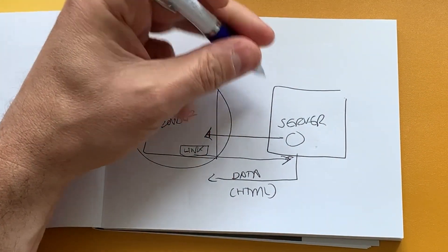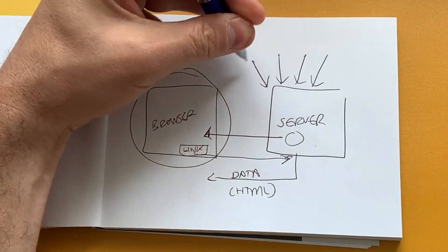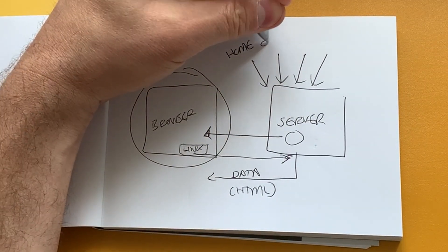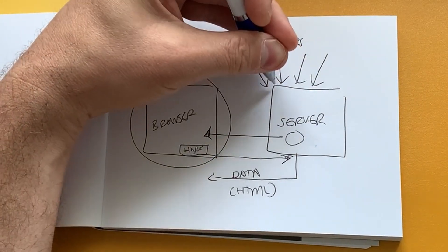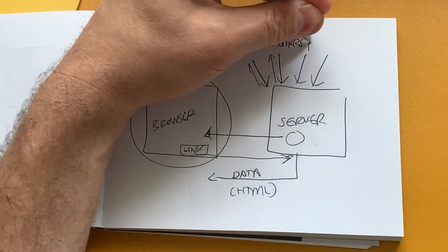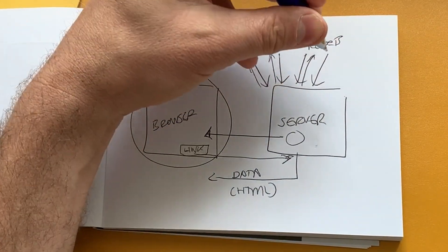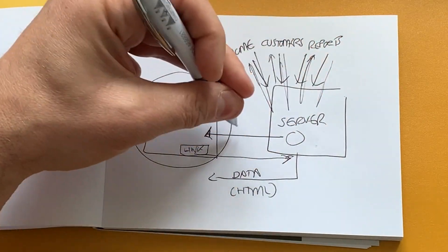Now the problem with this approach here is that the server can receive a lot of requests. For example, when you go to the website and click on the home page, we send a request for which the server has to respond. We click the customers page and it sends another request and the server has to respond. We click the reports and it sends another request and again the server responds.